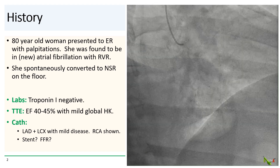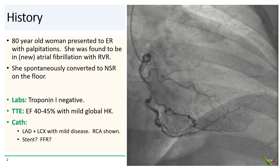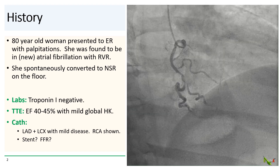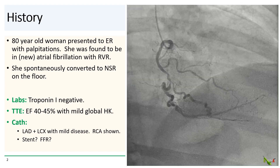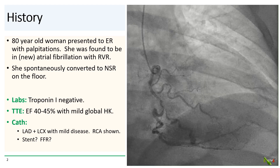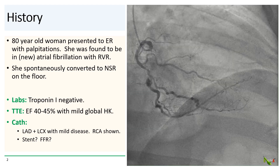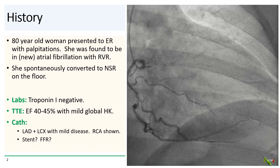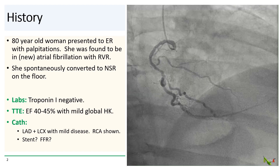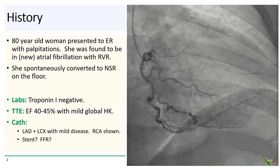She was found to be in rapid atrial fibrillation, presumably a new diagnosis. She was admitted to the floor where she spontaneously converted to normal sinus rhythm. Troponins remained negative, but the echo showed an EF of 40 to 45 percent with mild global hypokinesis.